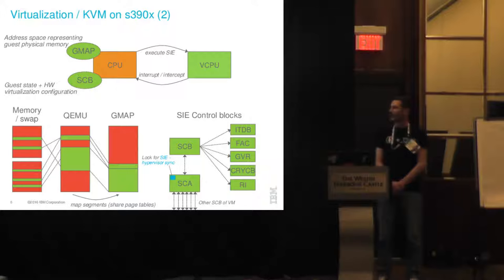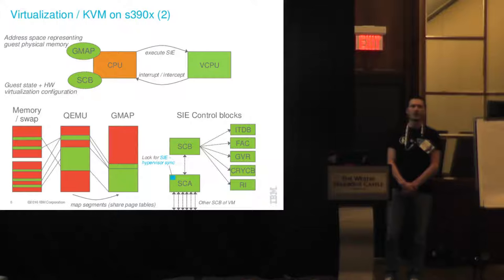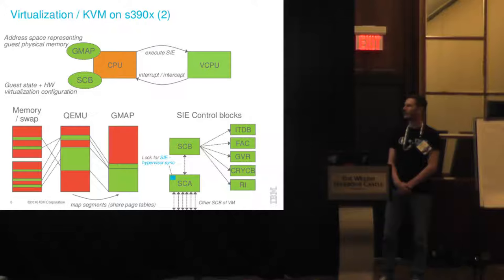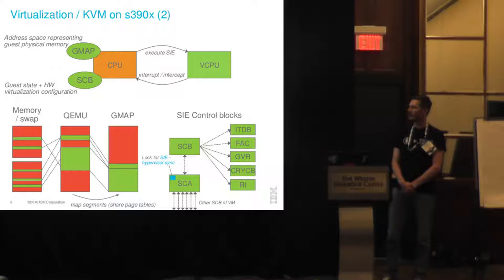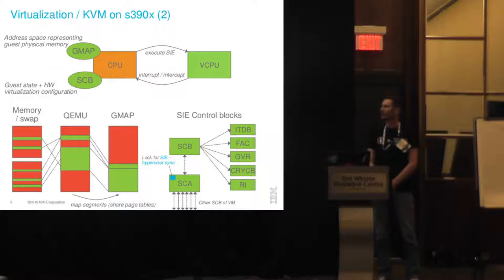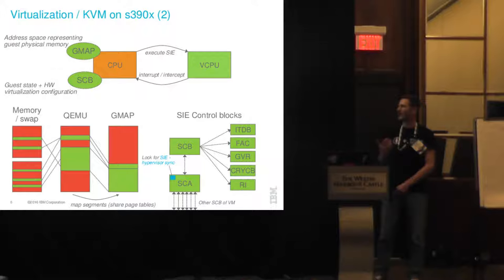From a memory management perspective, it all starts with a QEMU process containing memory slots — the guest physical memory is contained somewhere in this QEMU process. We have to map that to the real addresses, so that for example address zero for the guest actually lies at address zero, even though it's at a high address in user space. We do that by sharing certain page tables, which is quite nice because as soon as a page is mapped into our QEMU process it is automatically contained in our gmap without requiring much effort.